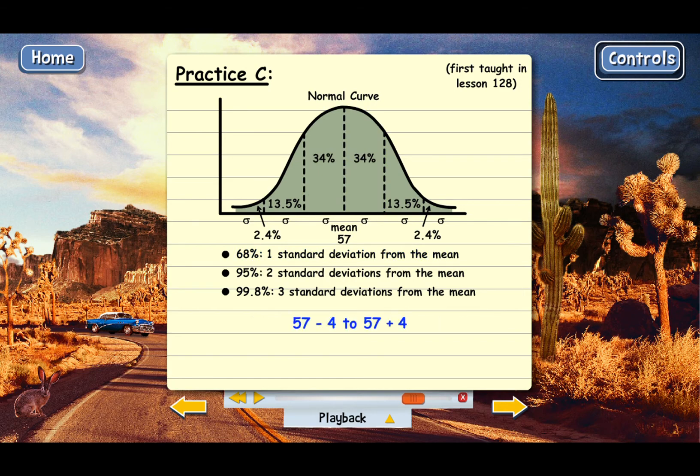And then let's just calculate what that is. It should be from 57 minus 4 to 57 plus 4. 57 minus 4 is 53, 57 plus 4 is 61. So 68% of the numbers should fall within the range of 53 to 61.